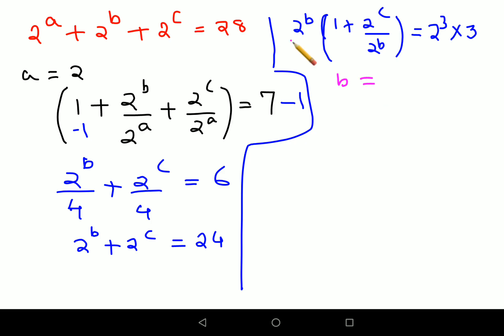From here I can deduce that the value of b is nothing but 3, because comparing, this is the even factor, so on comparing you can say the index of 2 raised to 3 will match 2 raised to b. Therefore b is nothing but 2 raised to 3. So now let's put this over here. And this bracket is 1 plus 2 raised to c upon 2 raised to b, which is 2 raised to 3, which is 8, equals to 3.